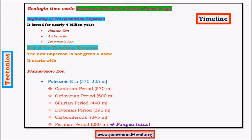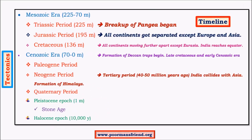To summarize the timelines: in the Permian period Pangaea was intact as a single landmass; in the Triassic period (early Mesozoic era) the breakup began; in the Jurassic period continents separated from one another except Europe and Asia; in the Cretaceous period drift was quick and India reached the equator about 70 million years ago — coinciding with Deccan Traps formation. This is between late Cretaceous and early Cenozoic. In the Tertiary period, about 40–50 million years ago, India collided with Asia, giving rise to the Himalayas.